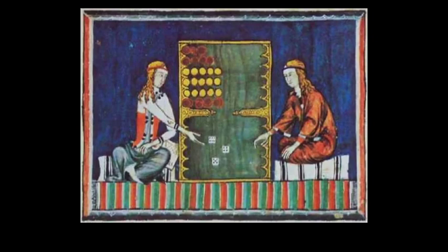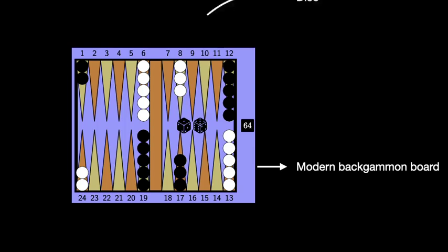Backgammon is one of the oldest board games in the world, dating back to 3000 BC. It is played with a pair of dice, which may be the reason why it is generally considered to be more a game of chance than skill.